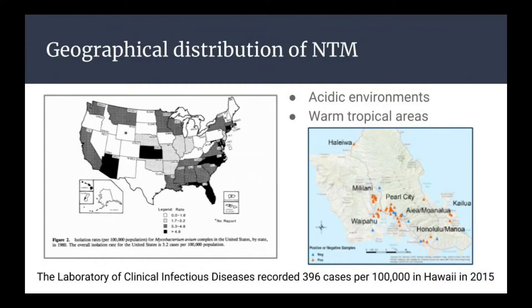And talking about where we can find it in the environment — the geographical distribution of this disease. This graph is showing the isolation rates of Mycobacterium avium, which is a really common species that's very pathogenic. Looking at this map of the United States, the highest rates seem to be Florida and Arizona, but also Hawaii — Hawaii is dark on this map.